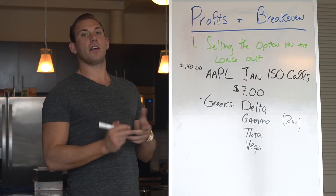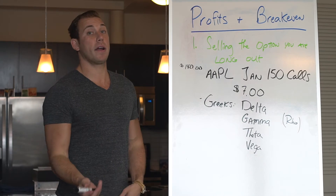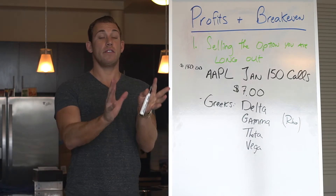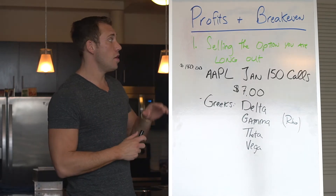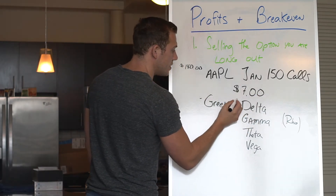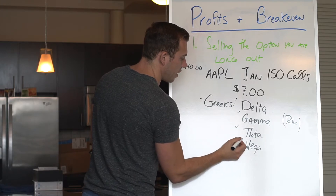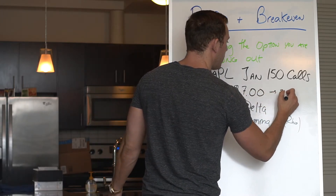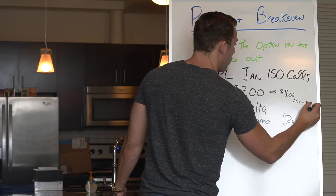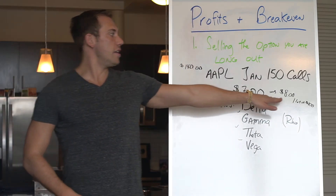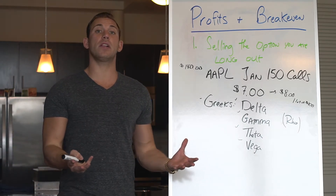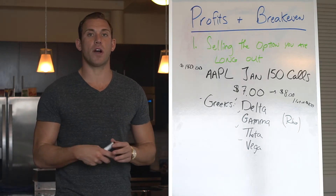The first way is to sell the option you're long. The great thing about options is you don't have to hold it till expiration. Let's say Apple moves based on Delta, Gamma, Theta, Vega, and these go up to eight bucks. If you own a one lot — the right but not obligation to own 100 shares of stock — if it went from seven to eight, that's $1 profit times 100, so it's a $100 profit if you exit the position before expiration.